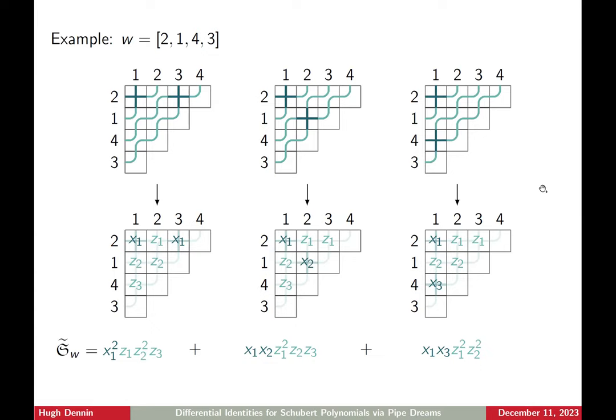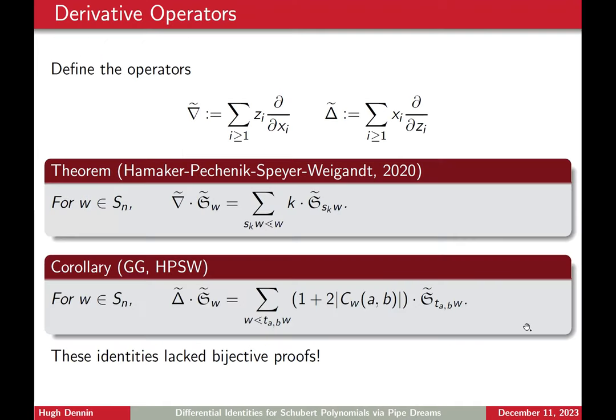So I think it's worth going through an example. Here's our permutation from before with its three reduced pipe dreams. To get its padded Schubert polynomial, I'm going to take each pipe dream appearing here and then replace every cross with a corresponding x variable with the subscript corresponding to the row it's in, and replace every bump with a z_i where the i corresponds to the row the bump is in. Then I take a product of all of the weights and that gives me the weight of the pipe dream. In this case, I have three monomials corresponding to each of the three reduced pipe dreams for 2143.